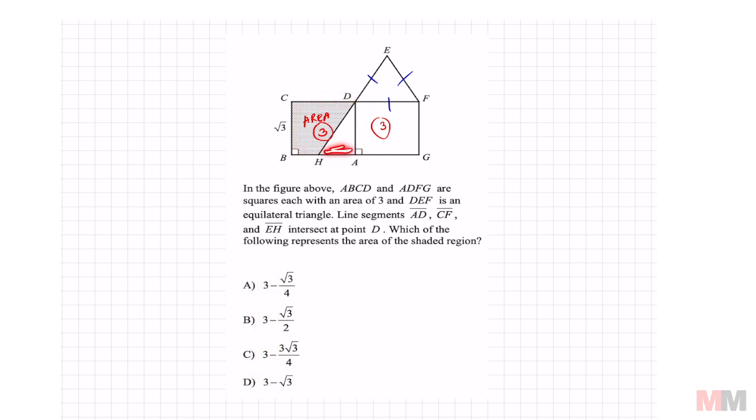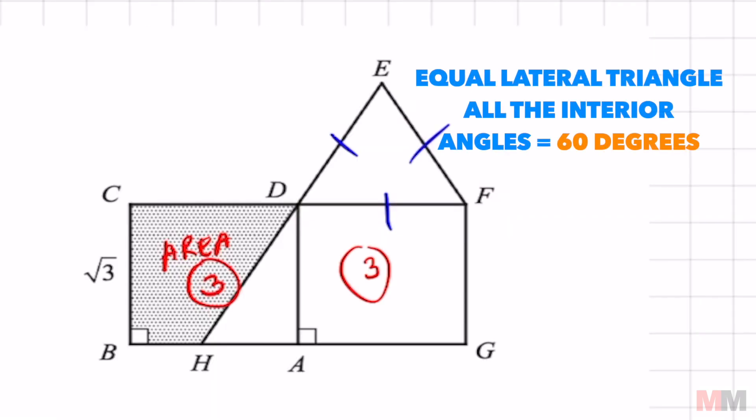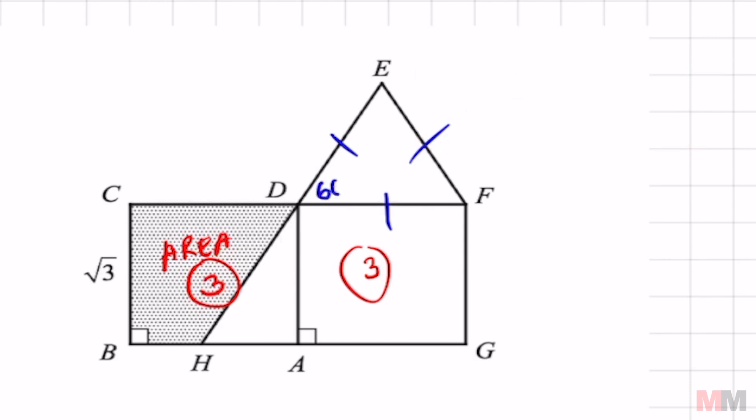So we just got to subtract this white region to find the area of the shaded region. And I was wondering what to do with this equilateral triangle too. Now I figured it out - in an equilateral triangle, the degree measurements inside is 60 degrees. So let's go ahead and label that 60 degrees.